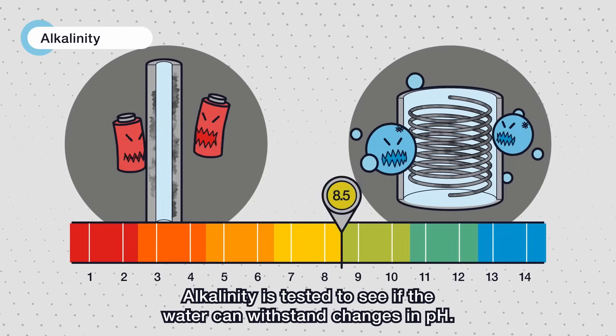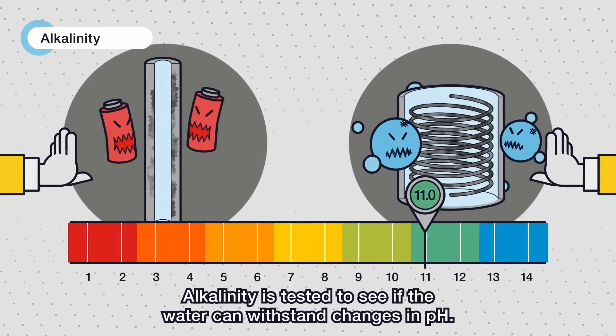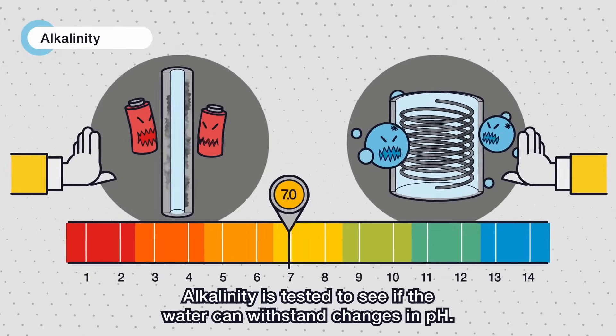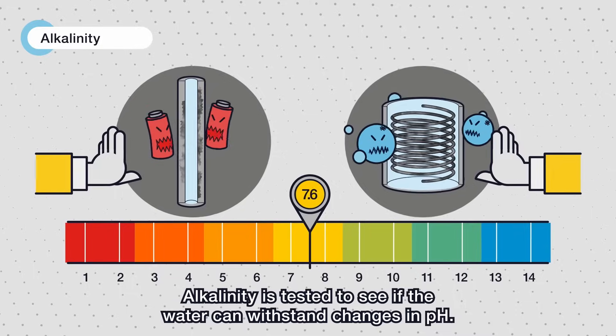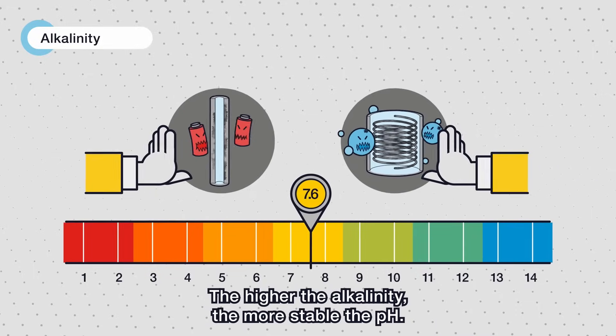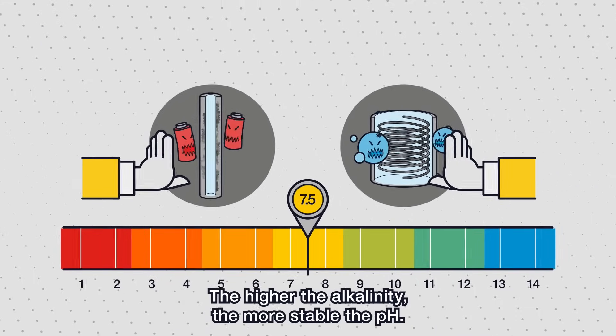Alkalinity is tested to see if the water can withstand changes in pH. The higher the alkalinity, the more stable the pH.